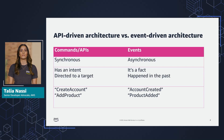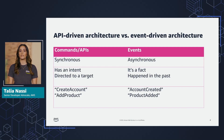In this approach, you send commands that are directed to a target — for example, place this order, or add this record to the database. API thinking is synchronous thinking. You can't move on until the API response comes back. With APIs, you send commands: do this thing. It has an intent, and it's directed to a specific target.